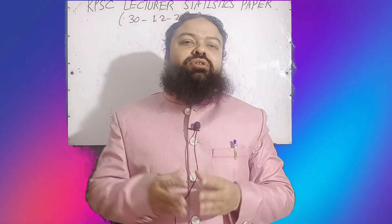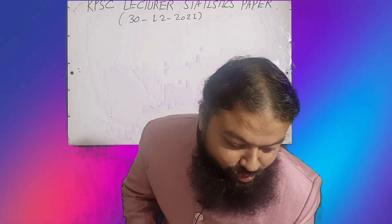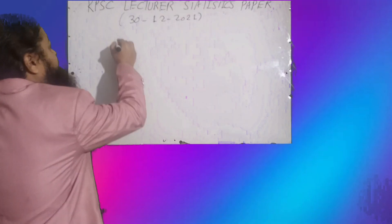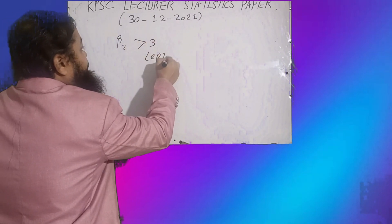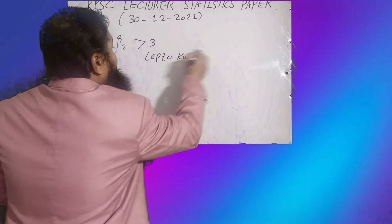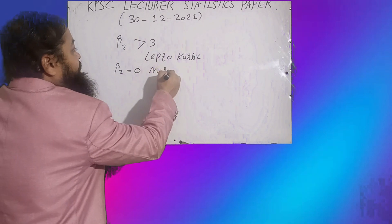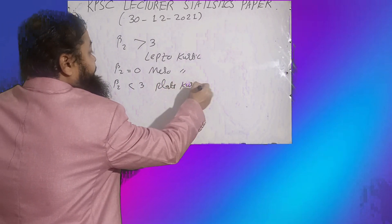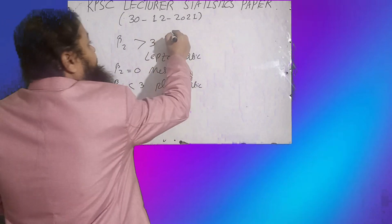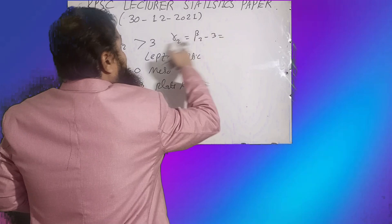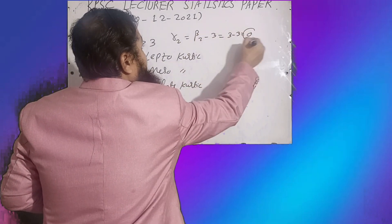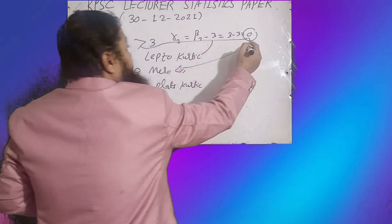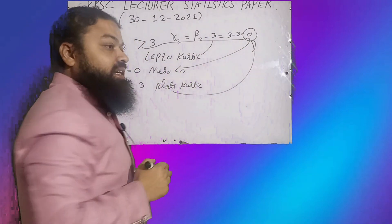Question number one: if beta2 is greater than 3, then the distribution is leptokurtic. If beta2 is equal to 3, we have mesokurtic. If beta2 is less than 3, we have platykurtic. There is also gamma2, which is beta2 minus 3. If gamma2 equals 0, it is mesokurtic. If gamma2 is greater than 0, it is leptokurtic. If gamma2 is less than 0, it is platykurtic.